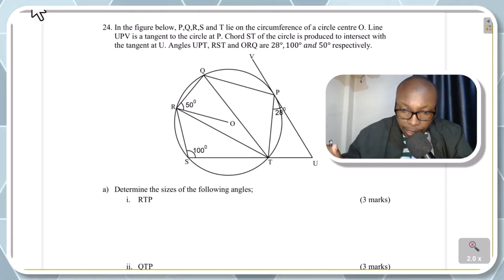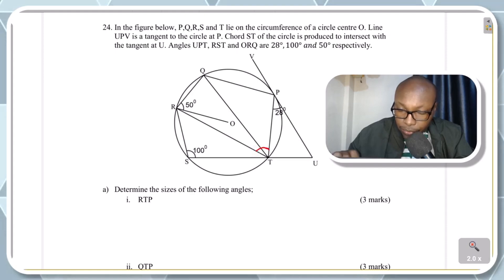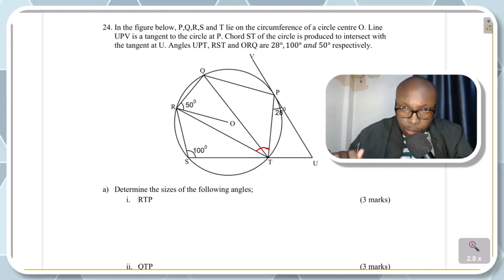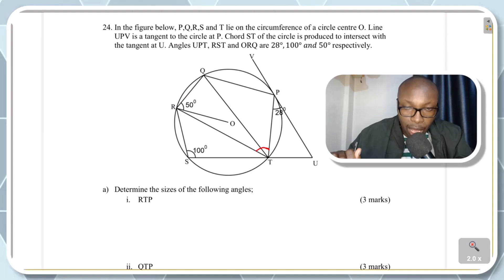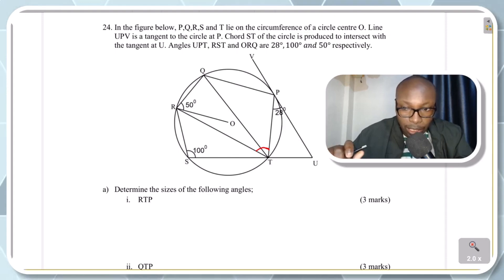The first part of the question asks us to determine the sizes of the following angles. The first one is RTP, so we identify that angle first. RTP in the diagram is this angle, and that is the angle we need to get. Now while solving this question, you need to be familiar with most of the angle properties of a circle, otherwise it will become very difficult — properties relating to circles, chords, and tangents.